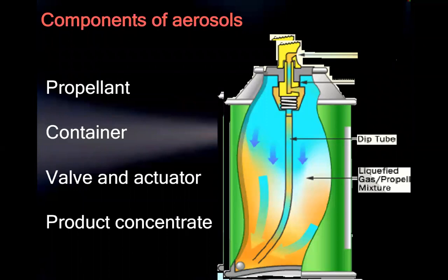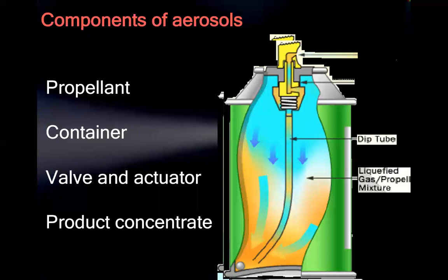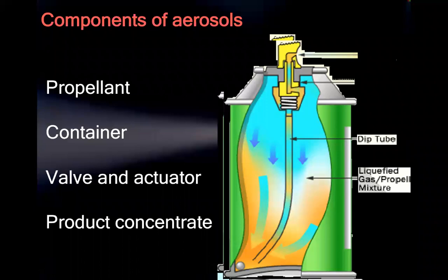The components of a pharmaceutical aerosol are: product concentrate, valve and activator, container, and propellant. The product concentrate — the drug — is inside; the valve and activator control release; the container holds everything. There is also a dip tube and liquefied gas or propellant mixture, as seen in the diagram.